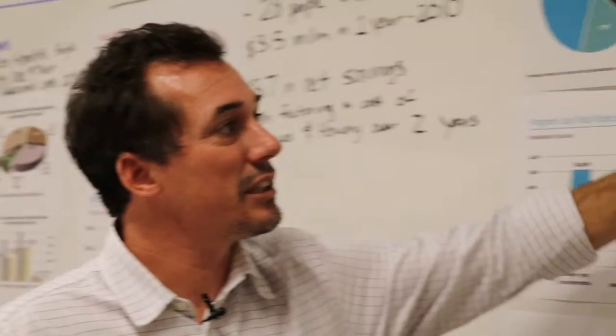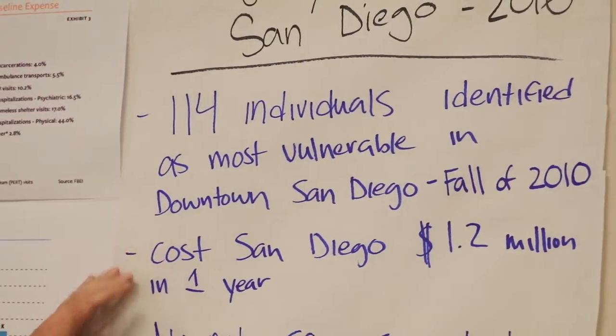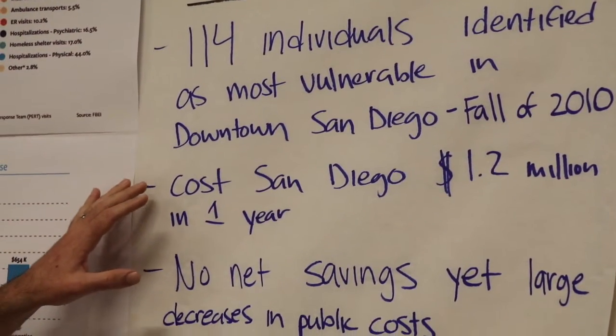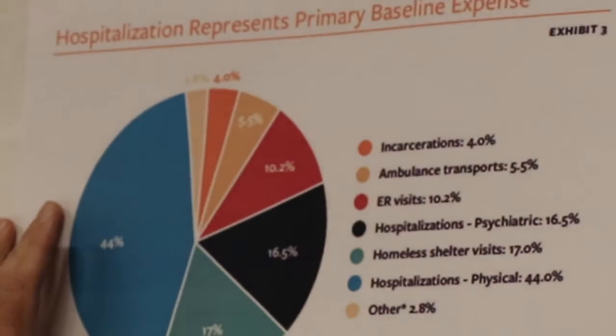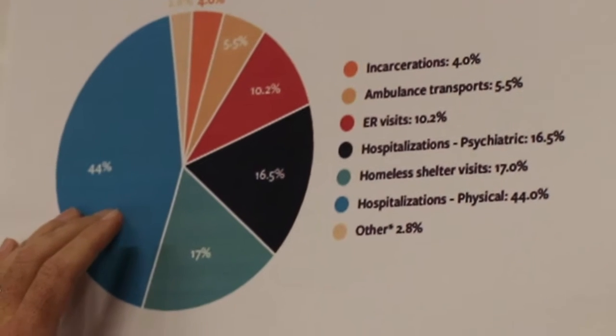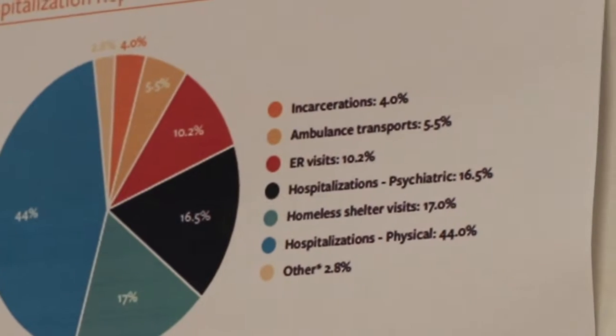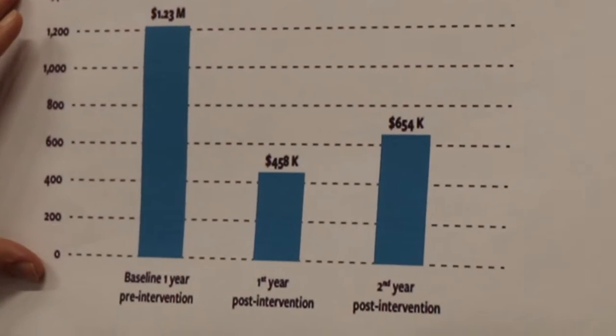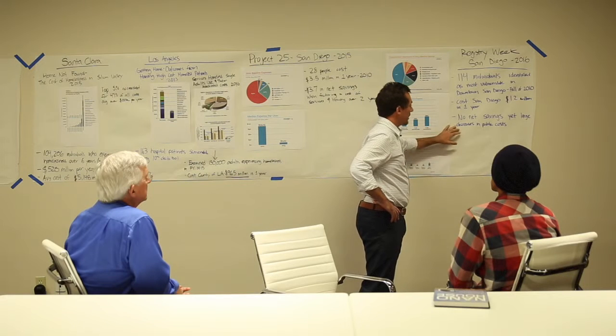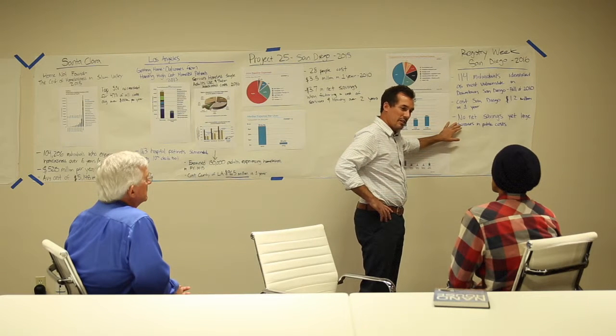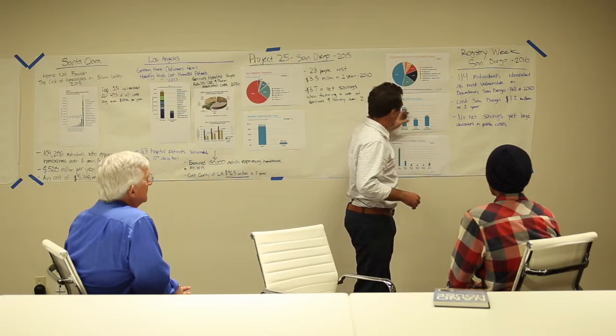And so using the same metrics as Project 25, the same university, Point Loma Nazarene, they did both studies. And so what we found in this study is we found 114 individuals. They didn't cost as much. They weren't like the Project 25. But they still, 114 people cost $1.2 million in a 12-month period. You can see where the costs land. Still, a good chunk of that is healthcare costs, so hospitalizations, emergency rooms, ambulance, things like that, but jail as well. Now I think the interesting part of this study was there wasn't necessarily a net savings because the actual cost of providing housing and services was essentially more than what the savings were. However, that wasn't ever the goal of this project.